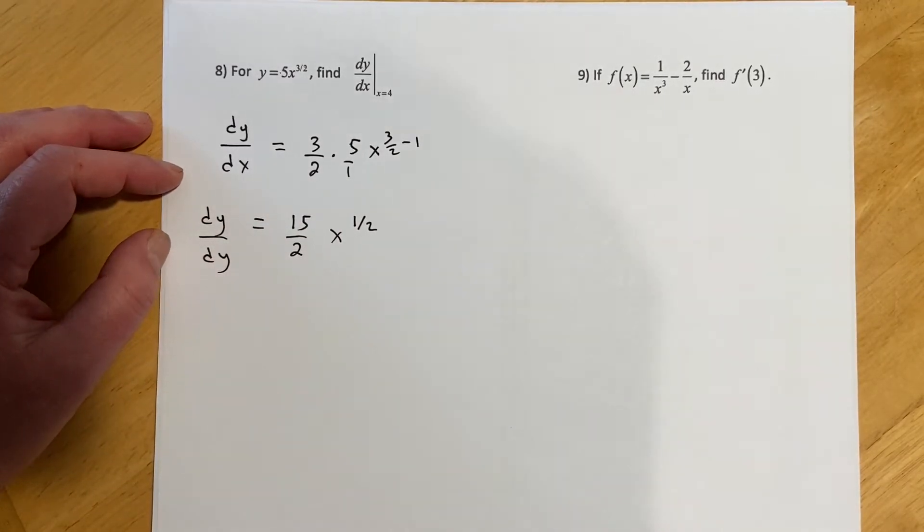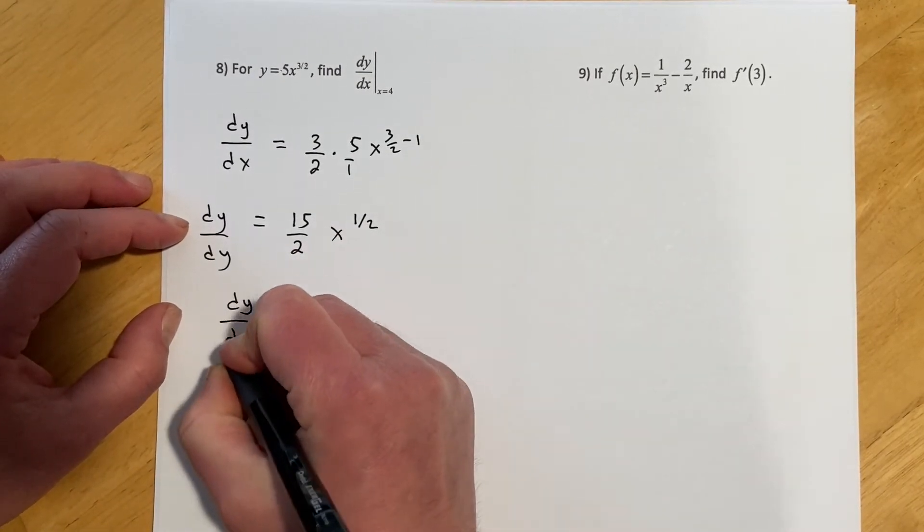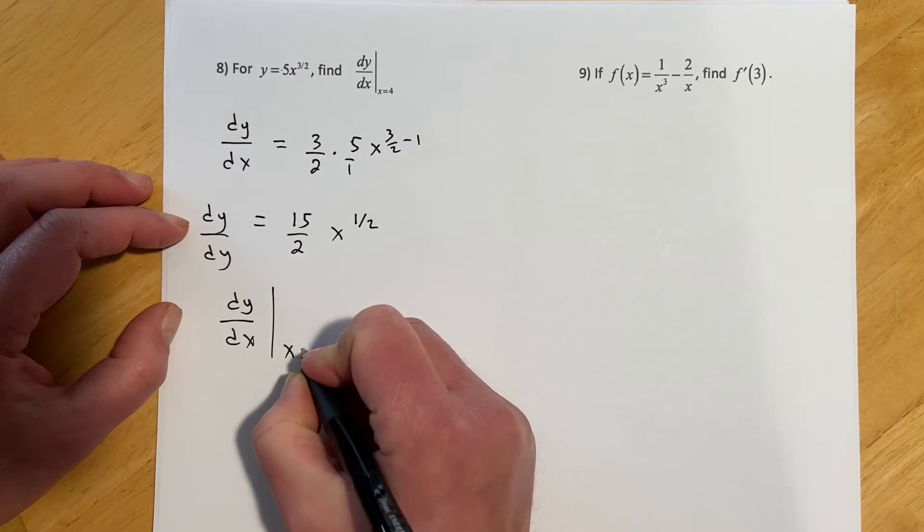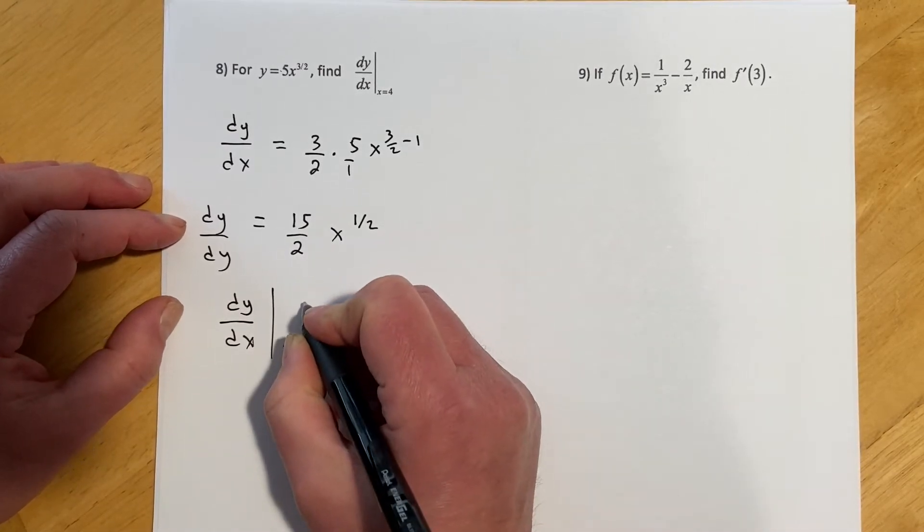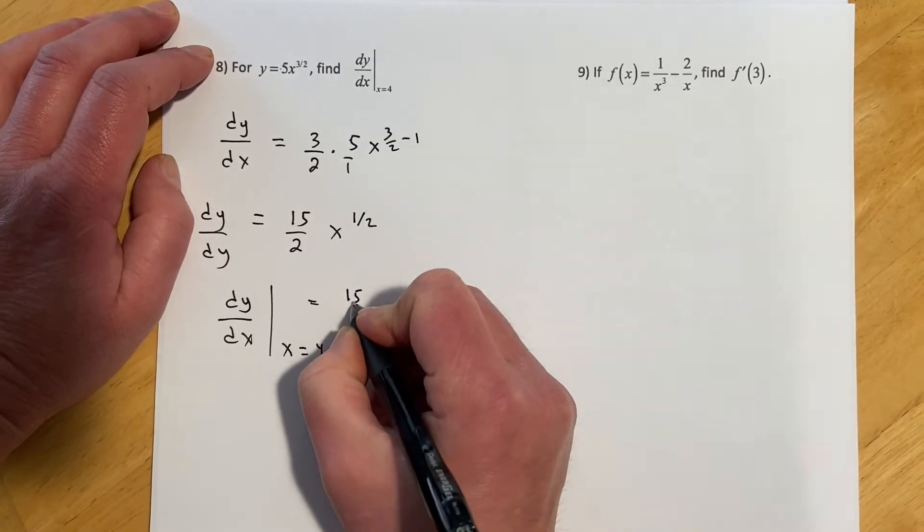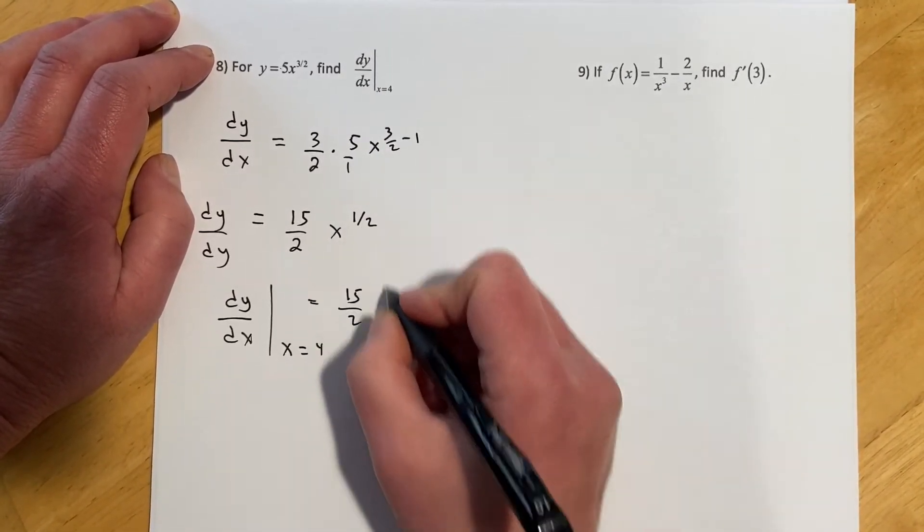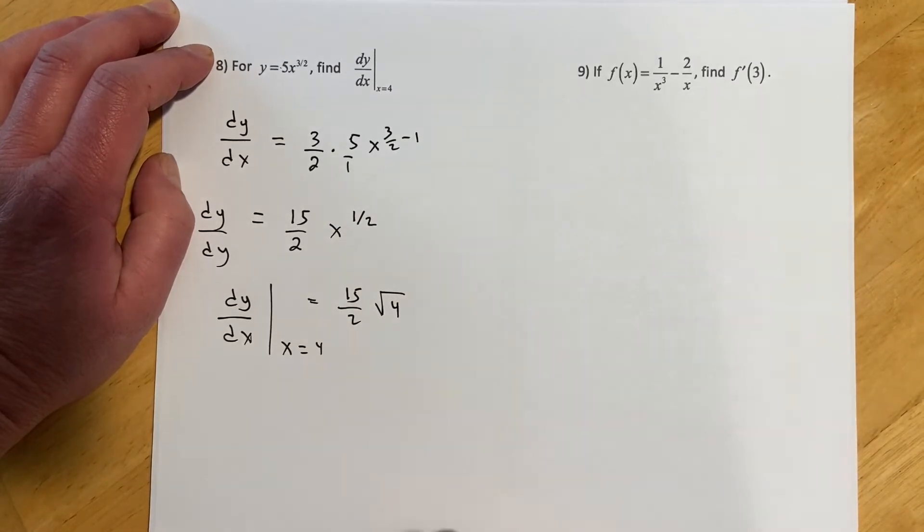But now I'm going to evaluate that derivative at x equals 4. So then the derivative evaluated at x equals 4, that would equal 15 halves, and then x to the 1 half, I'm going to write that as a root, same thing.